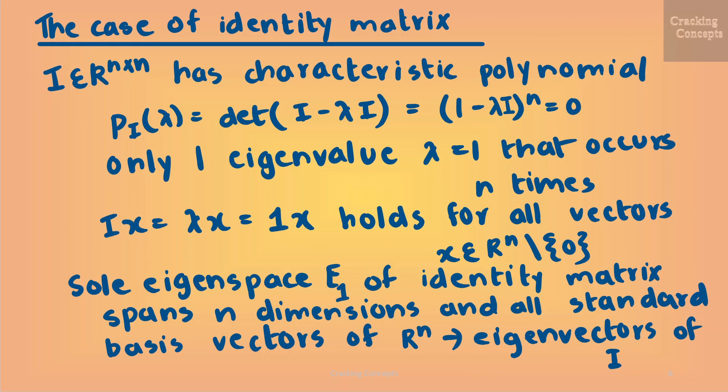Now we look into the case of an identity matrix. The identity matrix I belonging to the n×n dimension space has a characteristic polynomial P_I(λ) = det(I − λI) = (1 − λ)^n = 0, which has only one eigenvalue lambda = 1 that occurs n times. Moreover, Ix = λx where λ = 1 holds for all vectors x in R^n other than 0. Because of this, the sole eigenspace E_1 of the identity matrix spans n dimensions and all n standard basis vectors of R^n are eigenvectors of I.